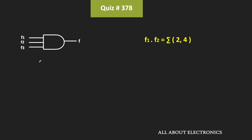We have been given that the AND operation of all three functions f1, f2, and f3 is equal to 0, meaning this function f is equal to 0. Although we have been given functions f1 and f2, we have not been given f3. But intuitively, since the output of this AND operation is 0, this function f3 will contain only the minterms which are not present in both f1 and f2. Because if f3 contains any of these two minterms, the output of function f would be equal to logic high. So f3 can only contain minterms 0, 1, 3, 5, 6, and 7.